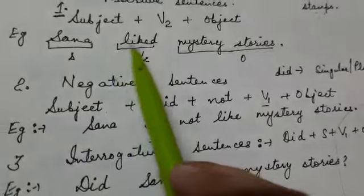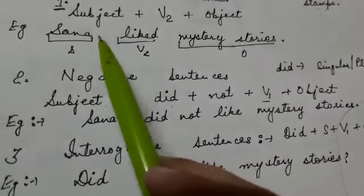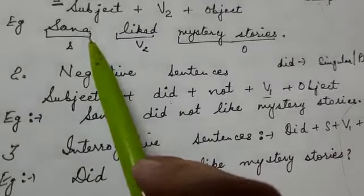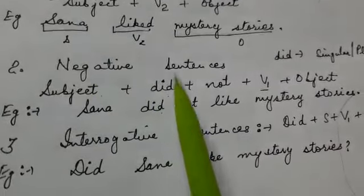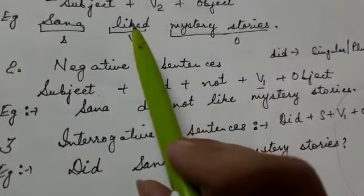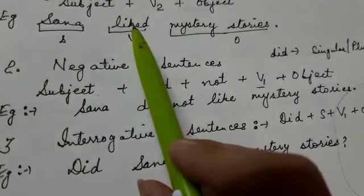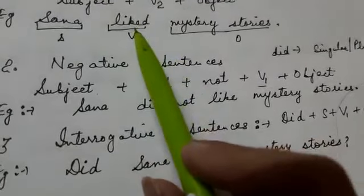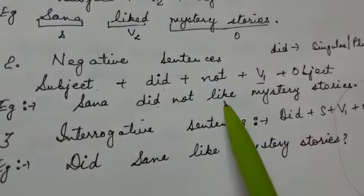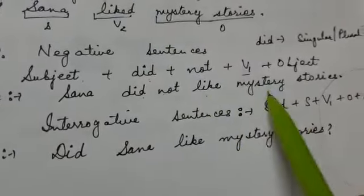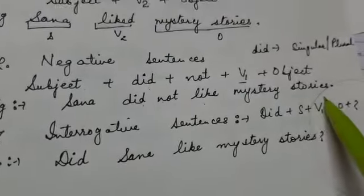So this sentence will be: Sana did not like — first form of 'like' — mystery stories.